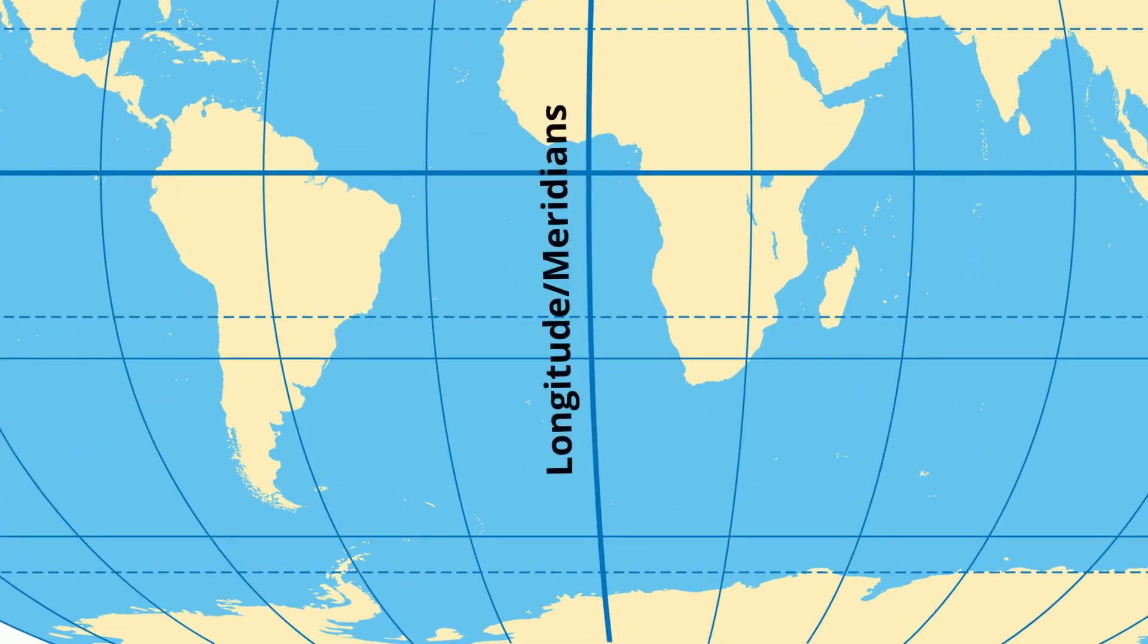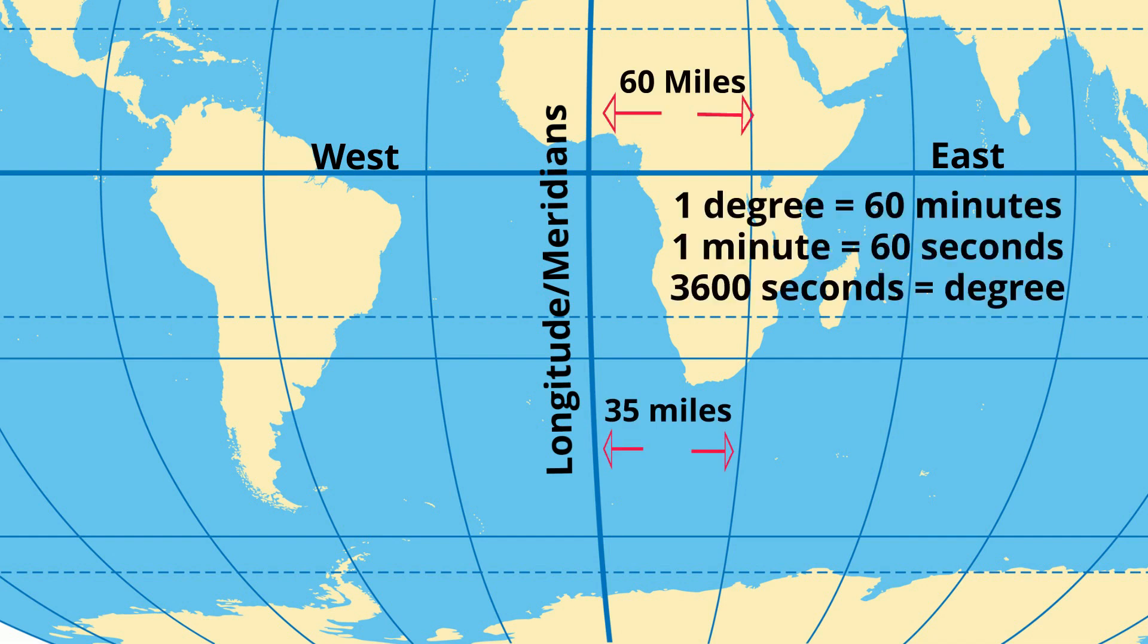Lines of longitude are also known as meridians, and they are vertical lines that measure east and west. The distance between these lines vary, but they are divided into minutes and seconds, just like lines of latitude.